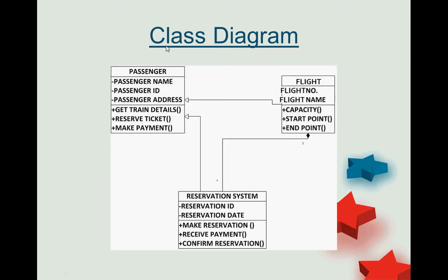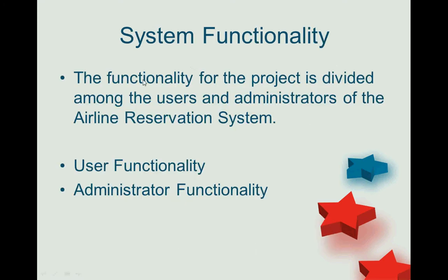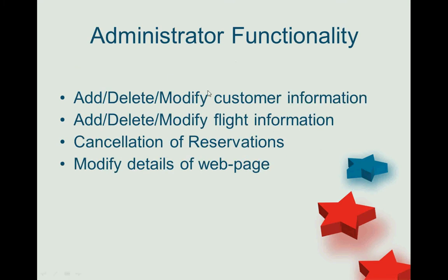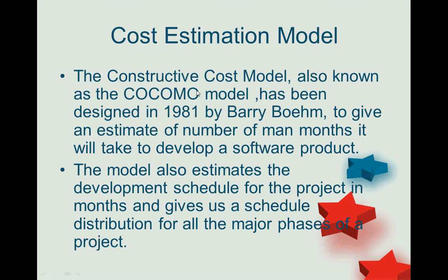The class diagram has three classes: Passenger, Flight, and Reservation System, with both public and private attributes and methods such as get train details, get flight details, and make reservation. The product functionality is divided between users and administrators. User functionality includes booking flights, displaying the passenger list, cancelling flights, and viewing booking instructions online.